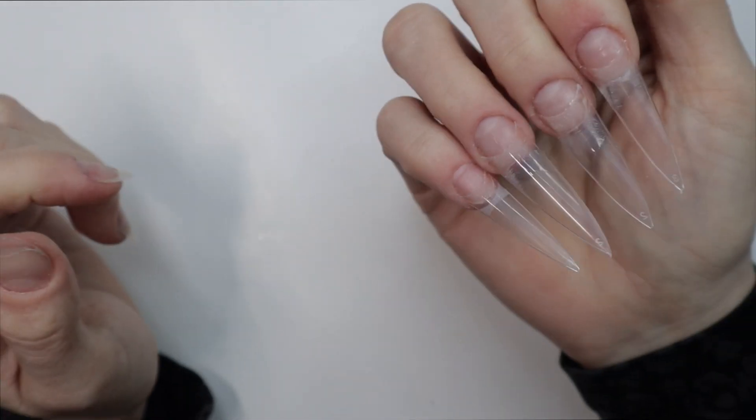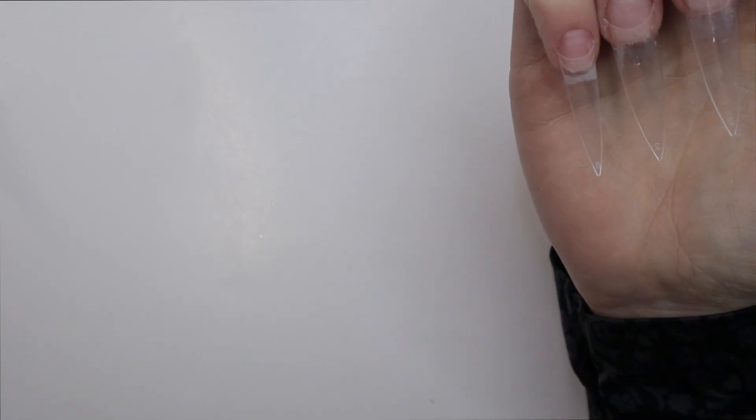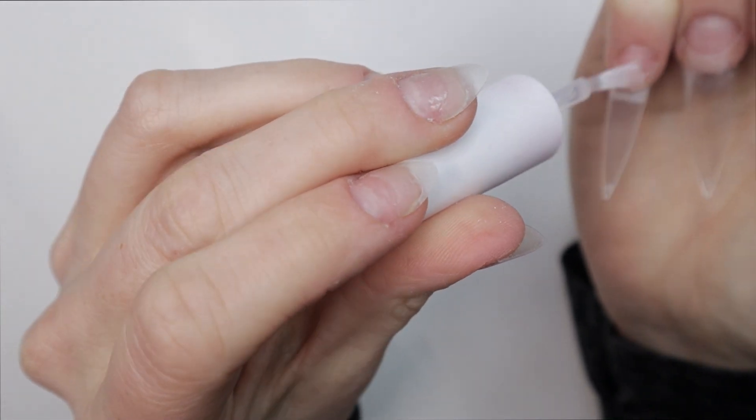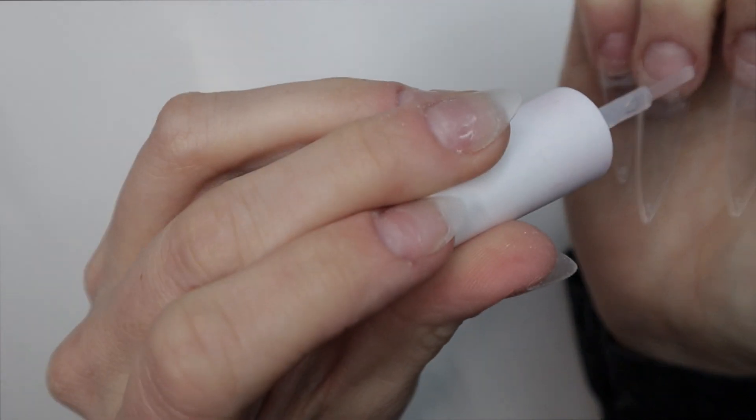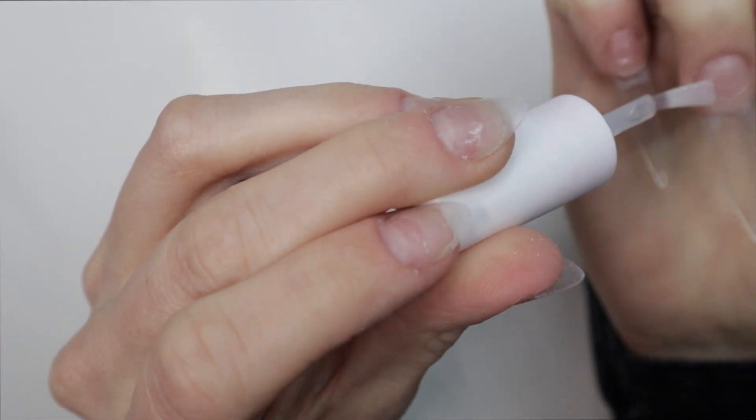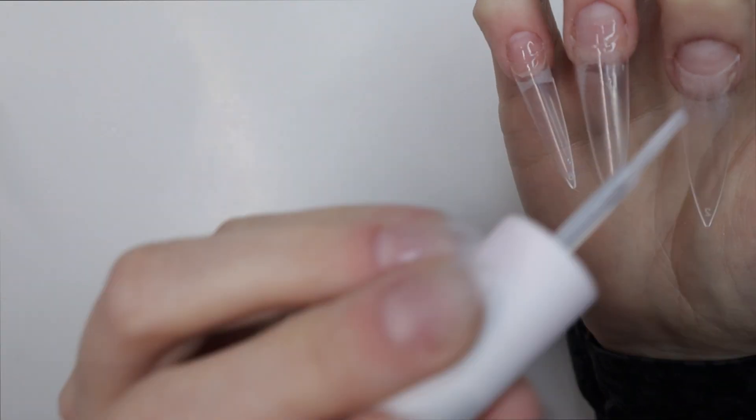What I like to do is take the brush-on nail glue and I will run it along the seam of the nail and the nail tip. So where the natural nail and the nail tip meet each other on the top, I will run that brush-on glue right over the top of it.